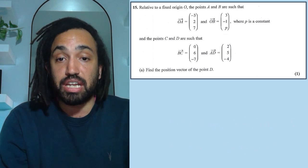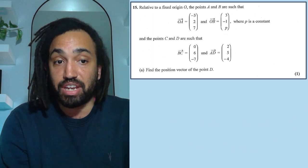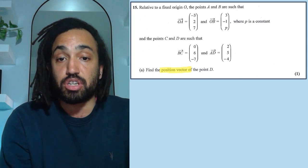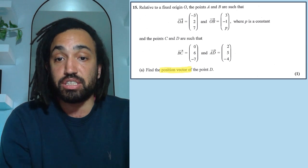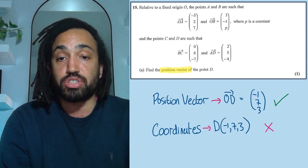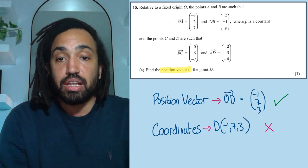Next question, it asks for position vector, and I see students a lot of the time write those as coordinates or vice versa. Remember, position vectors are columns, coordinates are rows.